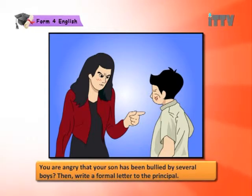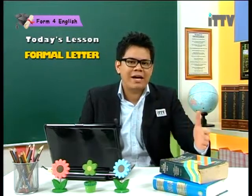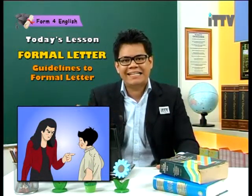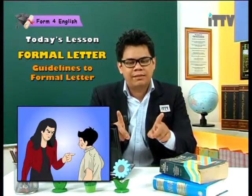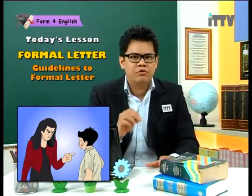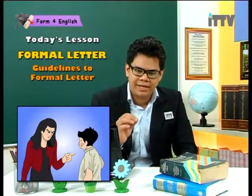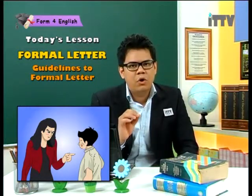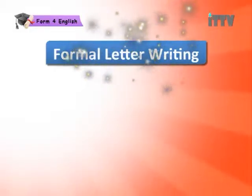Here is another example. We have a mother and a son, and you can see that the mother is very angry. The son's face shows that he has been hurt. You are angry that your son has been bullied by several boys — then write a formal letter to the principal. The mother wants to write a letter to complain that her son has been bullied. Now, the mother and the principal are not friends, so it is a formal relationship, and she will therefore have to write a formal letter.